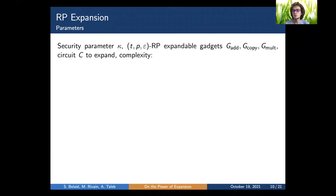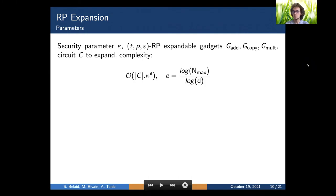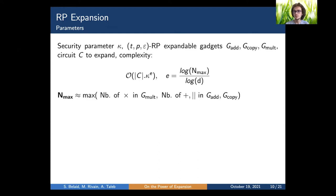Expanding a circuit to achieve an arbitrarily large security level comes with a cost. To achieve a security level K using fixed base N-share gadgets, the complexity of the expansion can be expressed in terms of the size of the original circuit and K to the power E, where E is a function of two main parameters: Nmax and D. Nmax depends on the complexity of the base gadgets — specifically the number of multiplication gates in the multiplication gadget and add/copy gates in those respective gadgets. For example, using a standard multiplication gadget, Nmax would be at least quadratic in the number of shares.